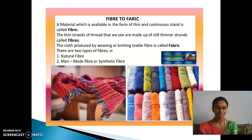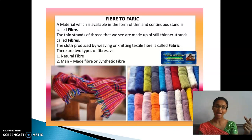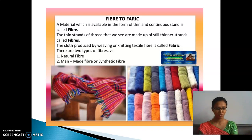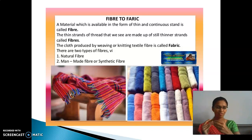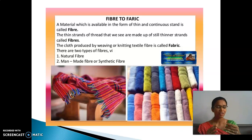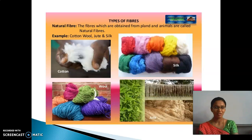How many types of fibers are there? They are natural and synthetic. Natural means the fibers which we get from plant and animal sources. From plant sources we have cotton and jute. For animal sources we have wool and silk. So, we have fiber, then yarn, then fabric. That fiber is converted into yarn, and this yarn is combined together to make fabric, or you may call it as cloth.